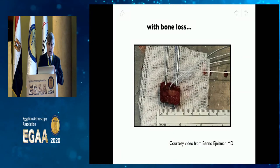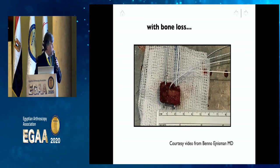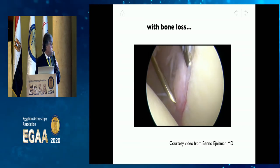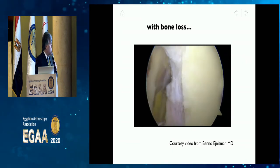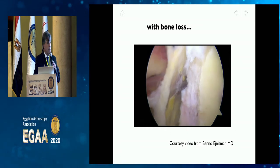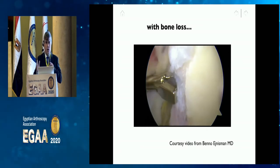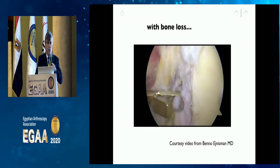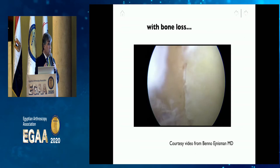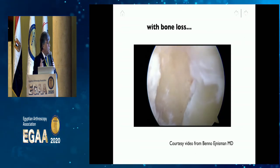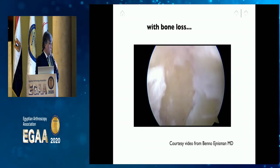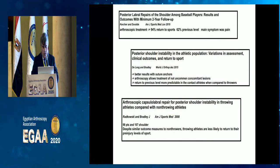When there is bone loss, we may also consider a bone graft procedure, especially when there is retroversion. We have to treat the pathology as it is — it's not just fixing the labrum or doing a bone block. You must look for all the issues: retroversion, bone loss, labral tear, and adjust the treatment to each patient's anatomy.